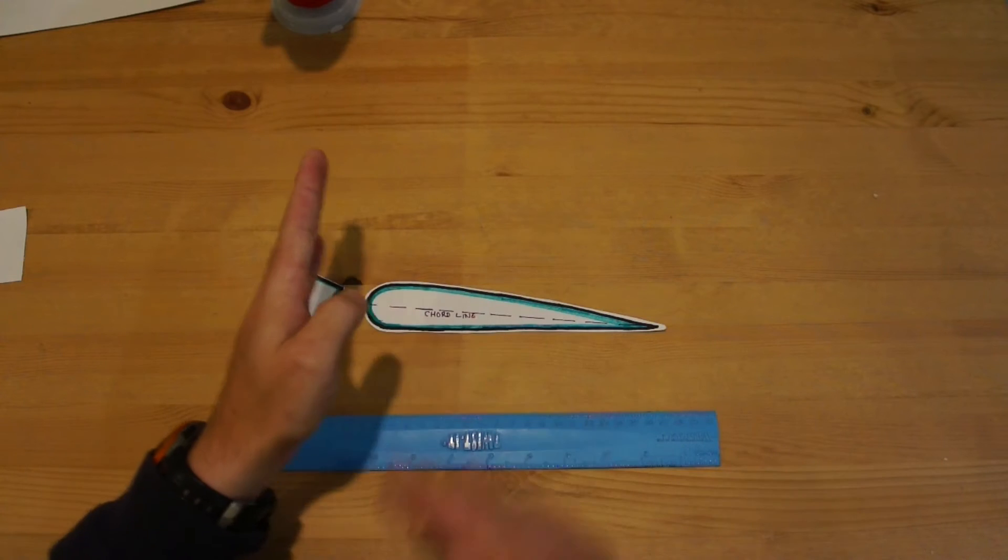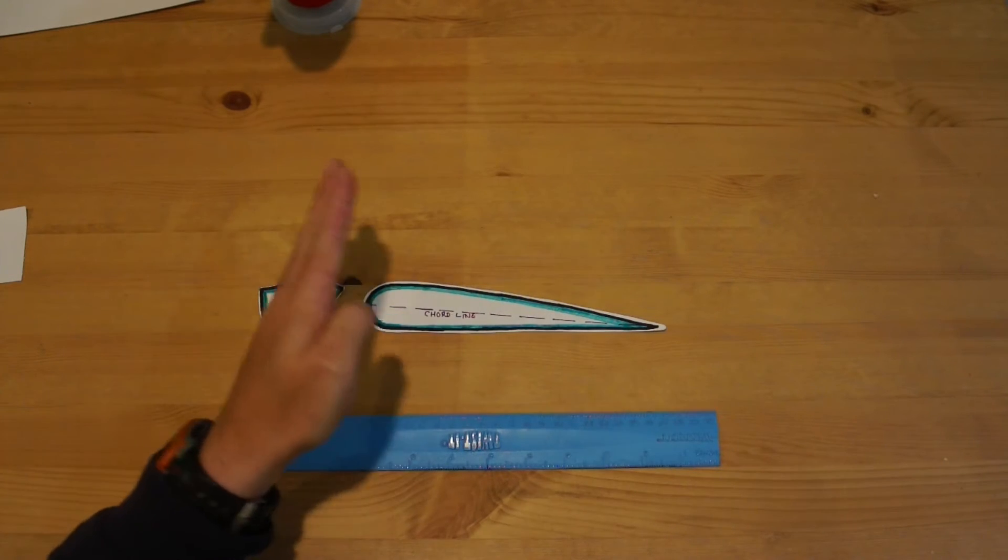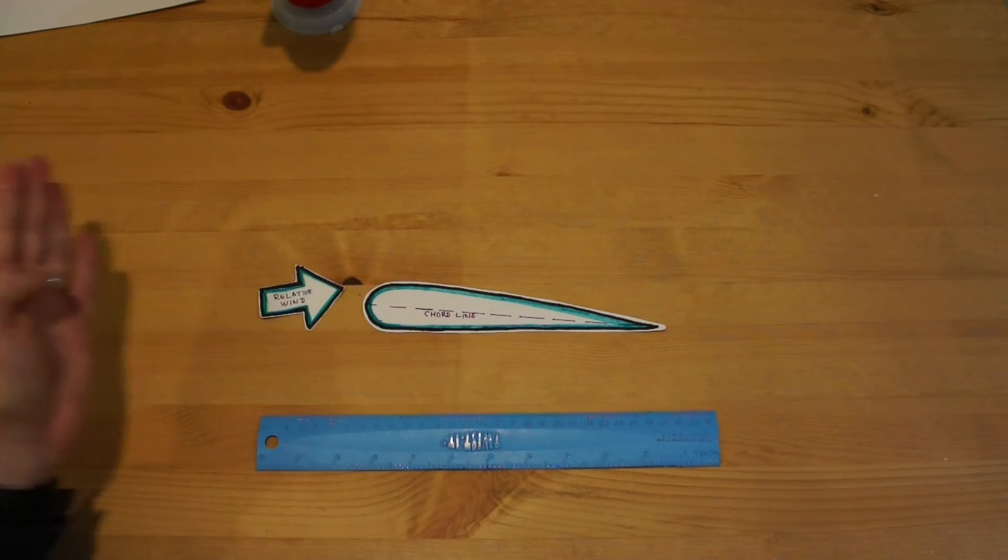You've probably driven along in a car and you've put your hand out the window before. As you're putting your hand out the window, the air hits your hand and as you move your hand up and down the wind deflects off of it, pushes your hand up or down, right?